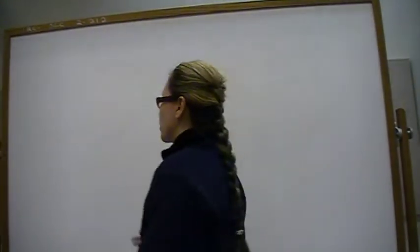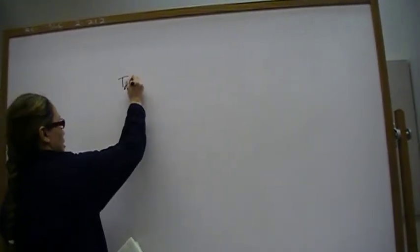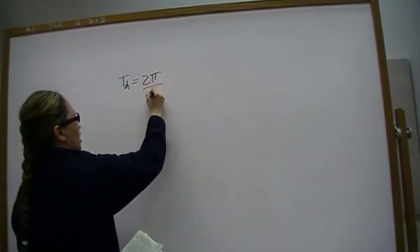Okay, so for part c, we're supposed to compare these variables to t sub d. And t sub d is 2 pi over omega d.